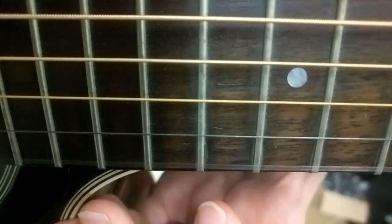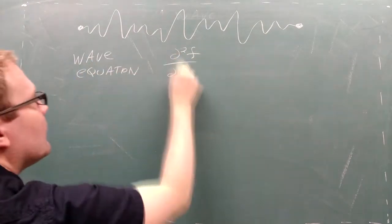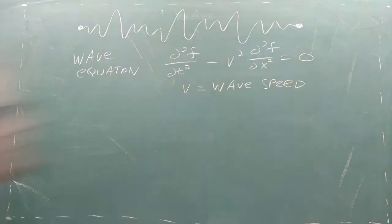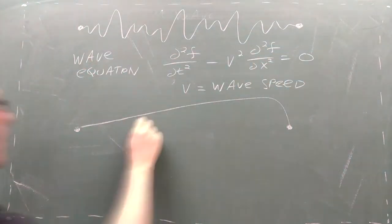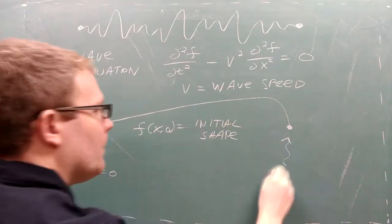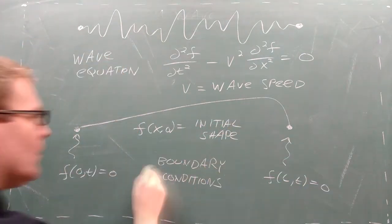When you pluck a guitar string, there's quite a lot of math going on. The vibration pattern is governed by a partial differential equation called the wave equation. Your plucking action creates an initial shape of the string, and the fixed ends of the string create two boundary conditions.